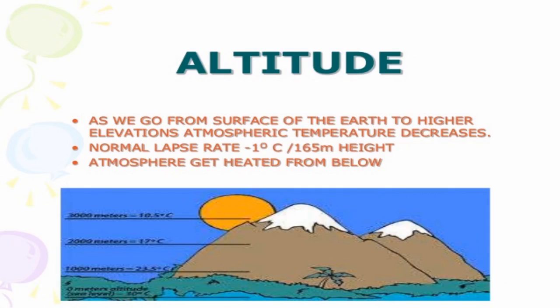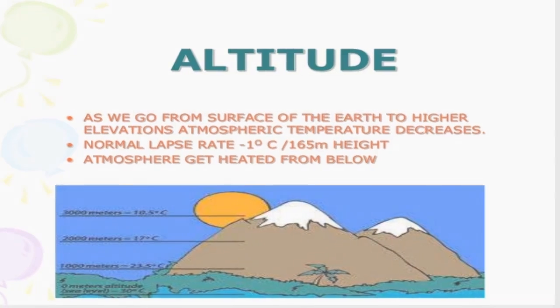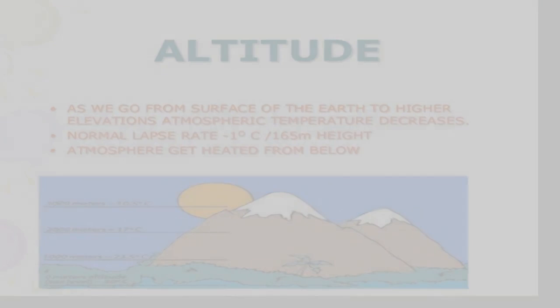So altitude affects our weather, latitude affects our weather — latitude means distance from the equator, altitude means height from the sea level — and we have discussed large bodies of water as well. Now let's talk about our next factor affecting our climate.